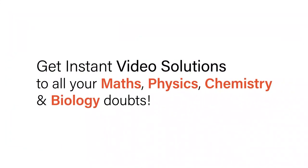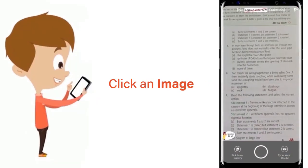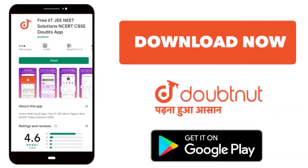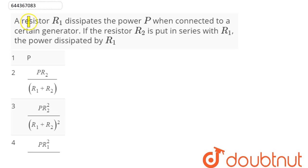With Doubtnet, get instant video solutions to all your maths, physics, chemistry and biology doubts. Just click the image of the question, crop the question, and get instant video solution. Download Doubtnet app today. Question is: a resistor R1 dissipates